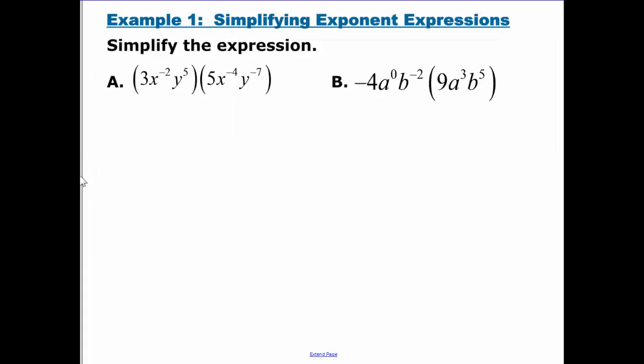Okay, so simplifying each one of these. For A, since everything's under multiplication, even though these are parentheses, really it's multiplication for all of these things together. So I can combine the 3 and the 5 to be 15. For the X's, I'm going to combine those exponents by adding them to get negative 6. For the Y's, I'm also going to add those exponents, but I get a negative 2. This isn't simplified because I have negative exponents. Anything that has a negative exponent goes in the denominator and becomes positive.